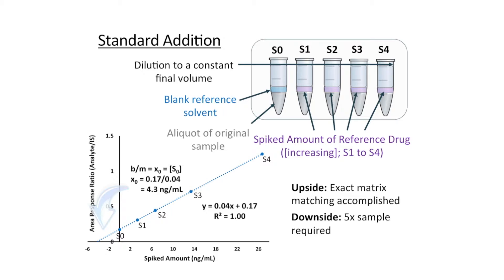When the samples are analyzed and a calibration curve is fitted, we can then use the x-axis intercept to tell us the concentration of the S0 unspiked sample. The downside to standard addition is that it's more labor intensive and also requires up to five times more sample. Though with the sensitivity of the QTOF, we're often incorporating dilution of the sample upfront, which means we may actually require only twice as much sample.